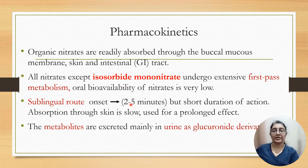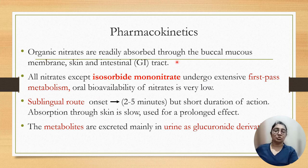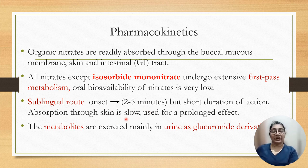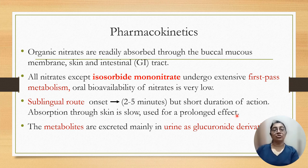Pharmacokinetics of nitrates: organic nitrates are absorbed through the buccal mucosa, skin, and intestinal tract. All nitrates except isosorbide mononitrate undergo extensive first-pass metabolism. Oral bioavailability is very low. The sublingual route has an onset of 2 to 5 minutes with a short duration of action, useful for acute attacks of angina. Absorption through the skin is very slow; the dermal route is used for prolonged effect and prophylaxis. Metabolites are excreted mainly in urine as glucuronide derivatives.